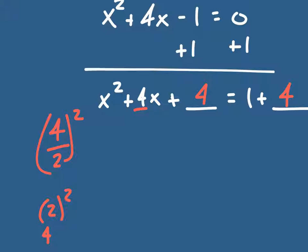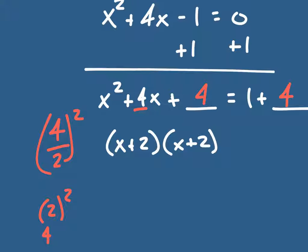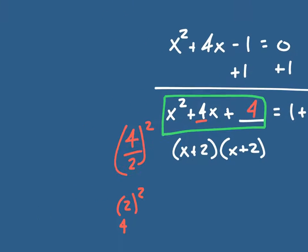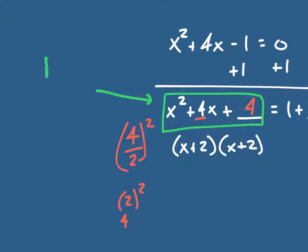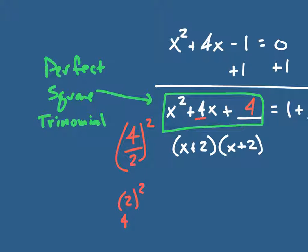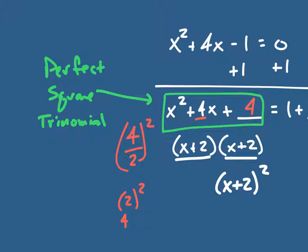Now I can factor this — it's going to factor to x plus 2 times x plus 2. This is what we call a perfect square trinomial. The reason it's called that is because I now have something times itself: x plus 2 times x plus 2, which I can write as x plus 2 quantity squared.